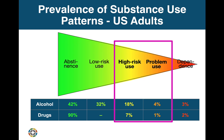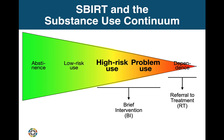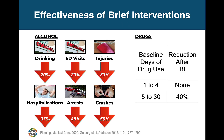Patients in the high-risk and problem use categories significantly outnumber those in the dependent category. Patients in these two categories don't need treatment because they have normal pleasure reward systems and full control over their substance use. Many will reduce their substance use in response to brief interventions — a 5 to 20-minute session and 1 to 3 brief follow-ups conducted either in person or by telehealth or phone. Brief alcohol interventions have been shown effective in dozens of randomized controlled trials, and several trials have shown that brief drug interventions are often effective as well. BI is the sweet spot of SBIRT because a small investment of time with patients in the high-risk and problem use categories often reduces substance use, serious illnesses, injuries, disabilities, ED visits, hospitalizations, and deaths.